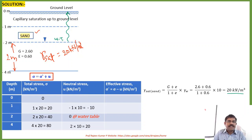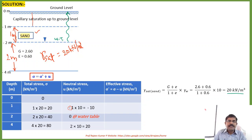Moving upwards, 1 meter above the water table is in the capillary zone, so there is a negative sign to be incorporated. The neutral stress is −1 × 10 = −10 kN/m². At the ground surface, which is 2 meters above the water table, it is −2 × 10 = −20 kN/m². This is the calculation for neutral stress — this is the tricky part you need to remember.